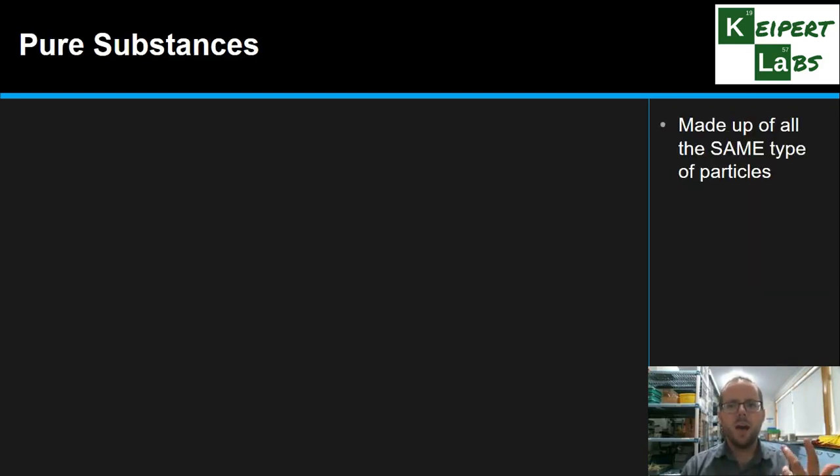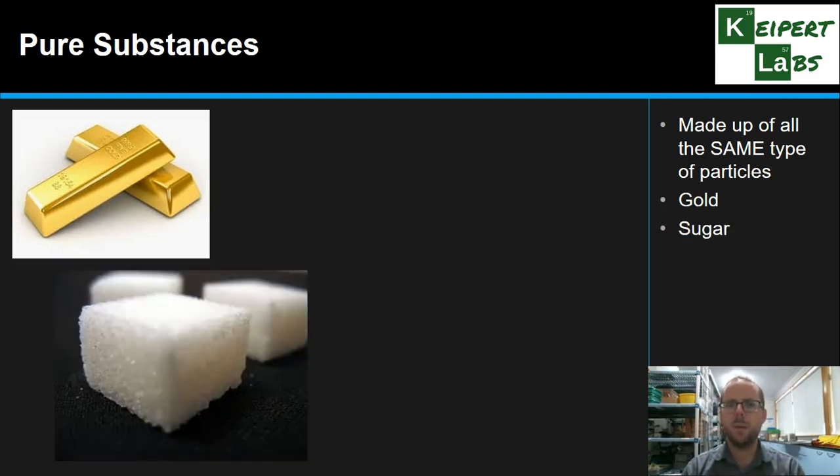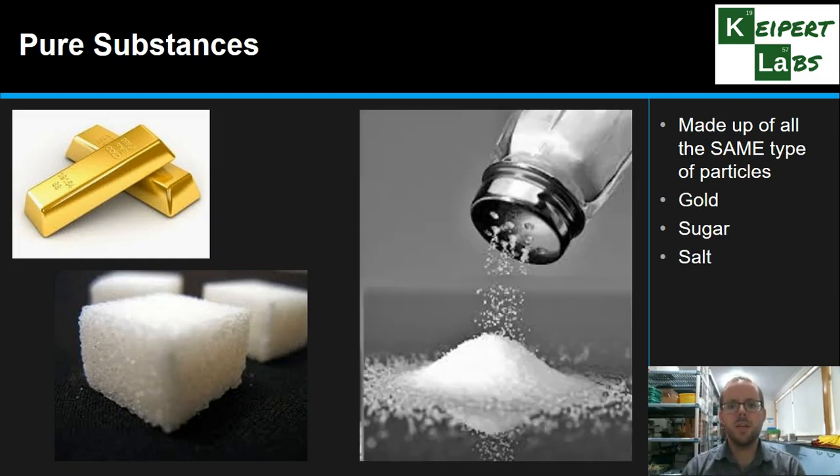So pure substances are made up of all of the same type of particles. So only one type of particle at that really smallest level. So gold made up of gold particles. Sugar made up of sugar particles we call molecules. Salt made up of salt particles. So they're the only type of particle that exists in that substance. Now whether it's a metal or whatever it might be, it's still only one type of particle.